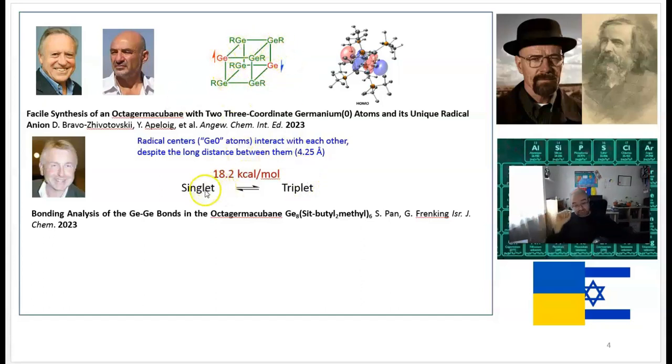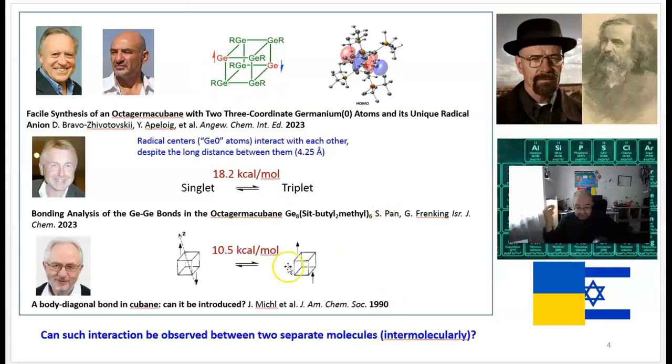Due to this interaction, this is a singlet ground state. The energetical difference between singlet and triplet is 18.2 kilocalories per mole. You may say, maybe that's something to do with germanium. However, the parent system made of carbons (C8H6) was studied in the 90s by Professor Joseph Michel—very similar situation. The singlet was by 10 kilocalories per mole more stable than the triplet, and again there was no bond between those carbons.